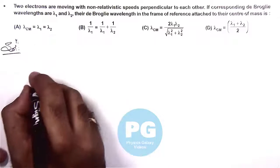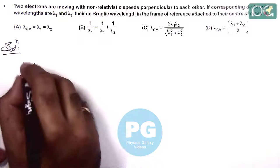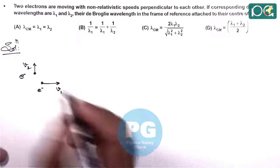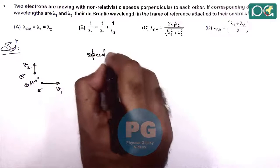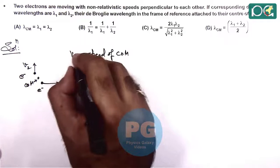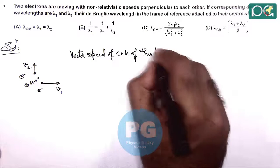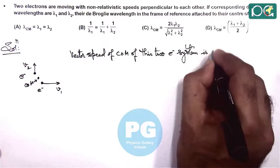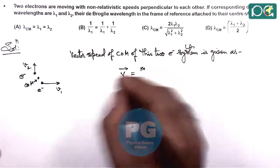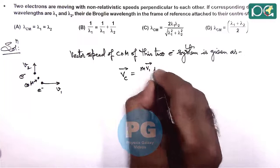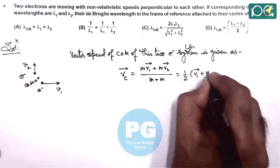In the solution, if we visualize the case, we have two electrons traveling perpendicular to each other with speeds V1 and V2. The velocity of the center of mass of this two-electron system is given as: since the mass of each electron is the same, V_cm = (mV1 + mV2)/(m+m), which gives half of V1 vector plus V2 vector.